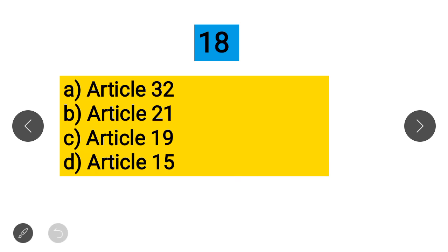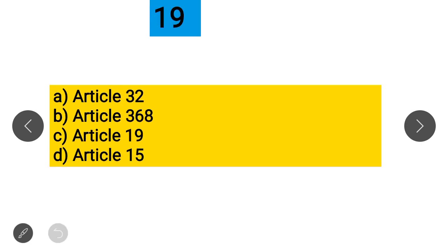Question 18: Which of the following articles remain in force during a national emergency? Option A: Article 32, Option B: Article 21, Option C: Article 19, Option D: Article 15. Article 32 — the right to constitutional remedy — is considered the heart and soul of the Indian Constitution.